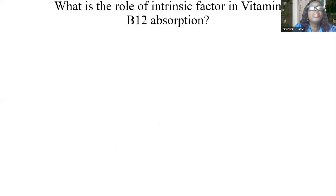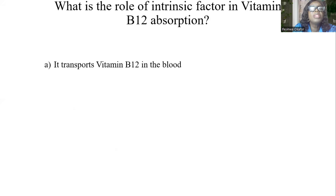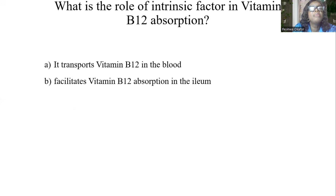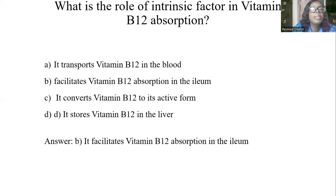What is the role of intrinsic factor in vitamin B12 absorption? A, it transports vitamin B12 in the blood. B, it facilitates B12 absorption in the ileum. C, it converts vitamin B12 to its active form. D, it stores vitamin B12 in the liver. And the answer is B, it facilitates vitamin B12 absorption in the ileum.